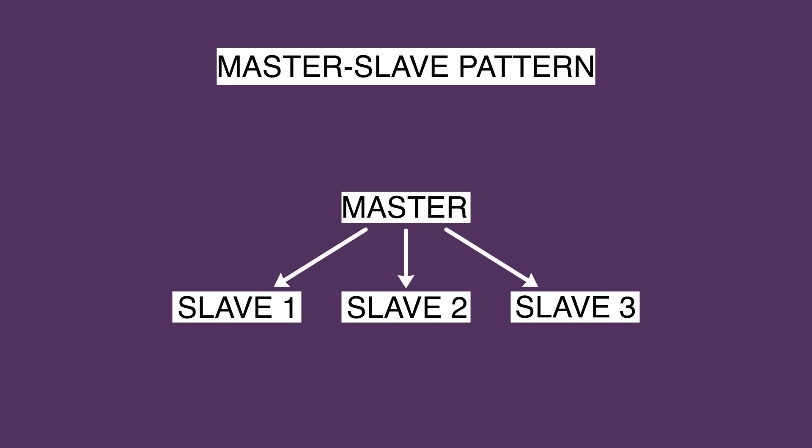Pattern 10: Master-Slave Pattern. This pattern consists of two parties: master and slaves. The master component distributes the work among identical slave components and computes a final result from the results which the slaves return. The advantage is accuracy, in which the execution of a service is delegated to different slaves with different implementations. However, this pattern can only be applied to a problem that can be decomposed. The master-slave pattern is usually used in database replications where the master database is regarded as the authoritative source and the slave databases are synchronized to it.